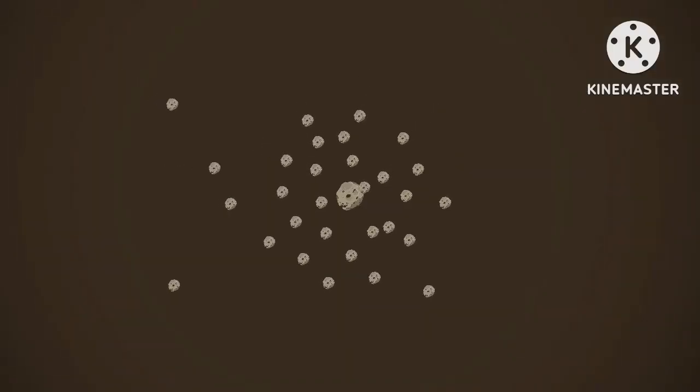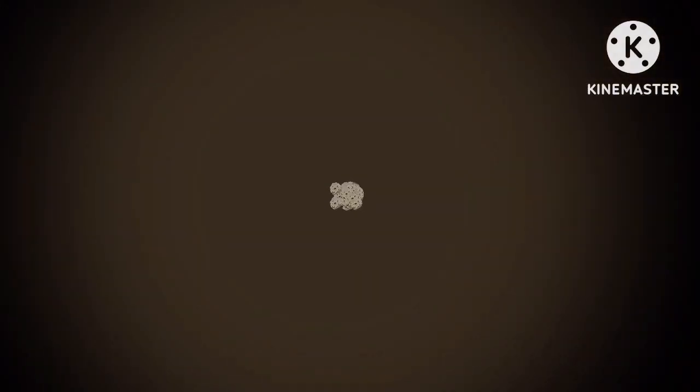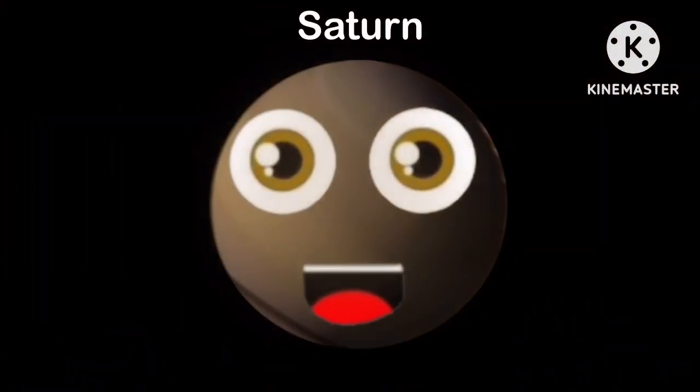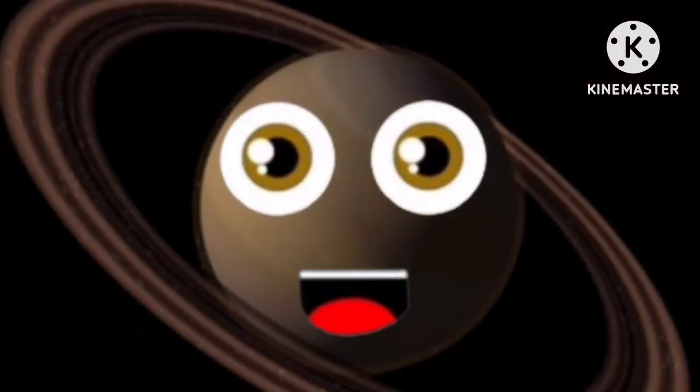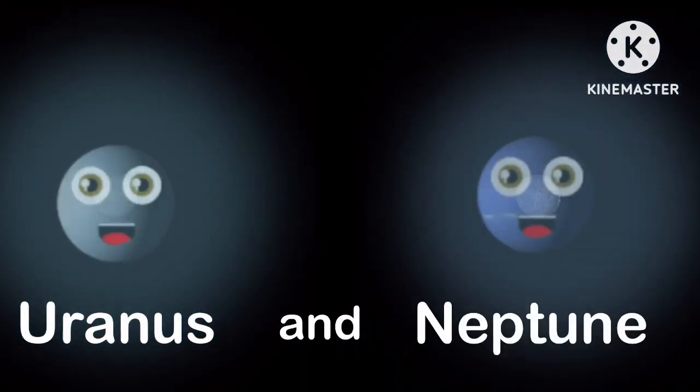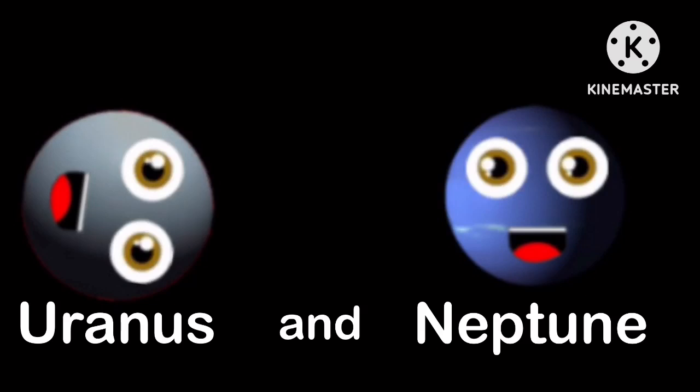The next planet that formed is thought to be the planet we all call Saturn with the rings we see. The next two planets that formed in theory are Uranus and Neptune, Giant and Icy.